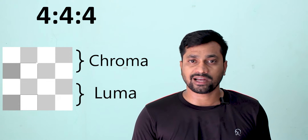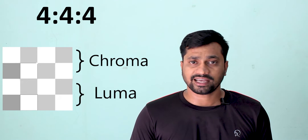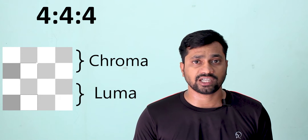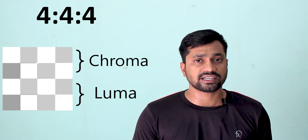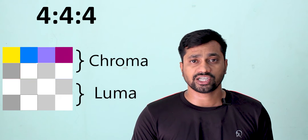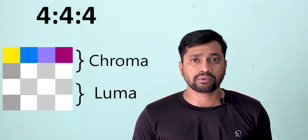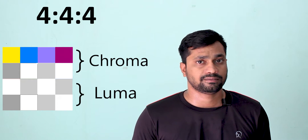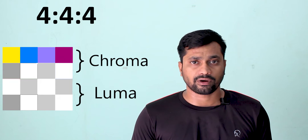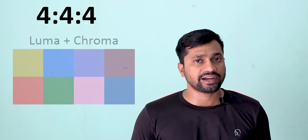Since we are not touching the luma segment, we keep those as-is and only change the chroma part. The second number represents how many pixel blocks we need to modify — here four means four individual and unique pixel blocks, meaning four individual unique colors with no changes. The third number is also four, again representing four individual unique pixel colors on the second chroma row.